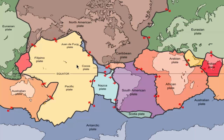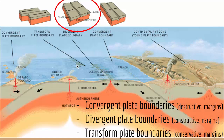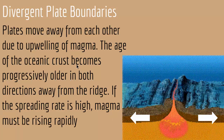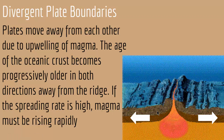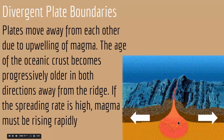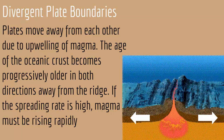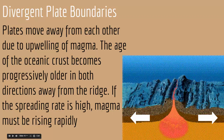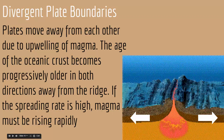Let's look at these three types of boundaries in more detail. Divergent plate boundaries are boundaries where plates move away from each other due to upwelling of magma. As shown in this animation, magma comes to the surface and pushes plates apart — to the right and to the left — creating a space and therefore creating more plate. The age of the oceanic crust becomes progressively older in both directions away from the ridge.